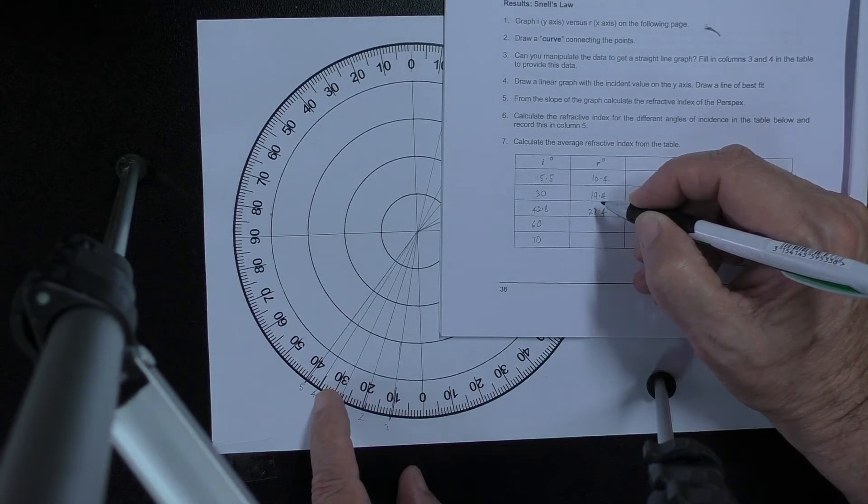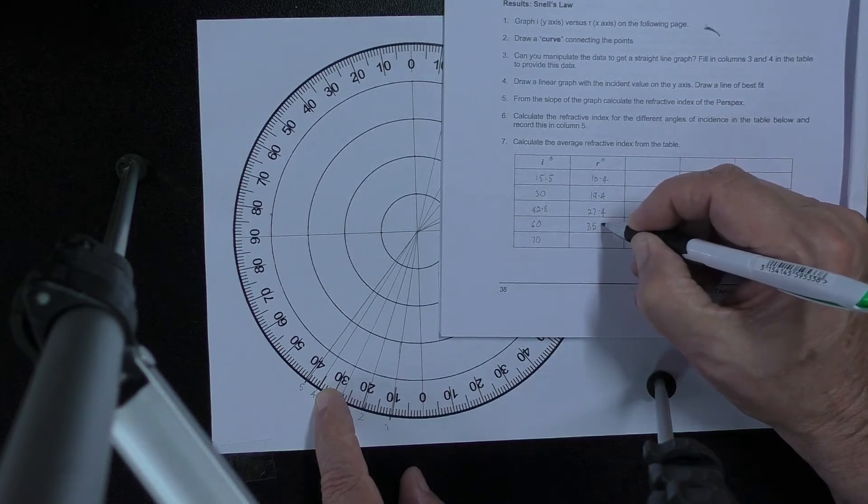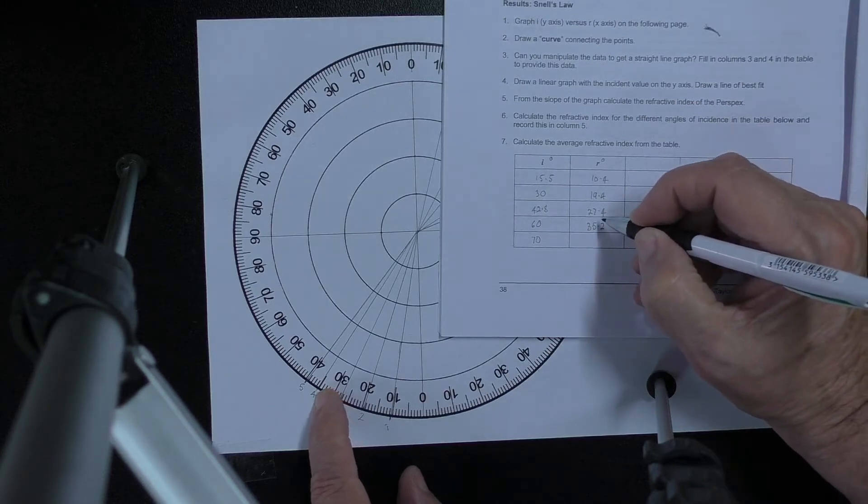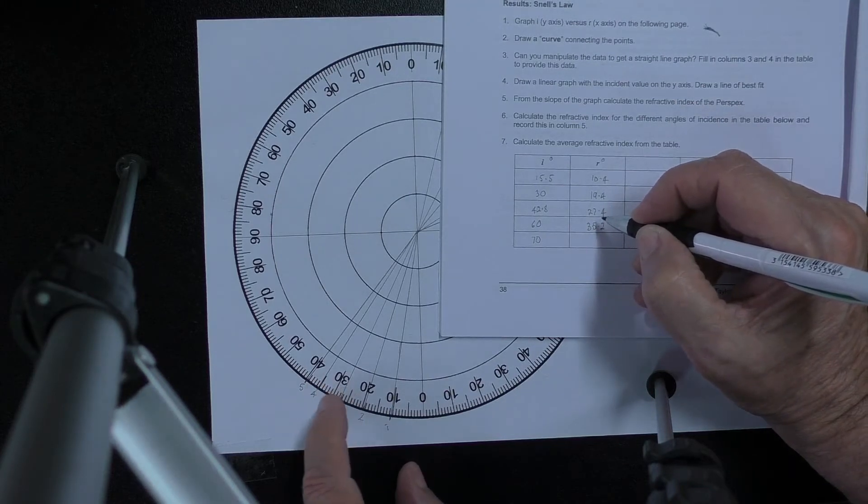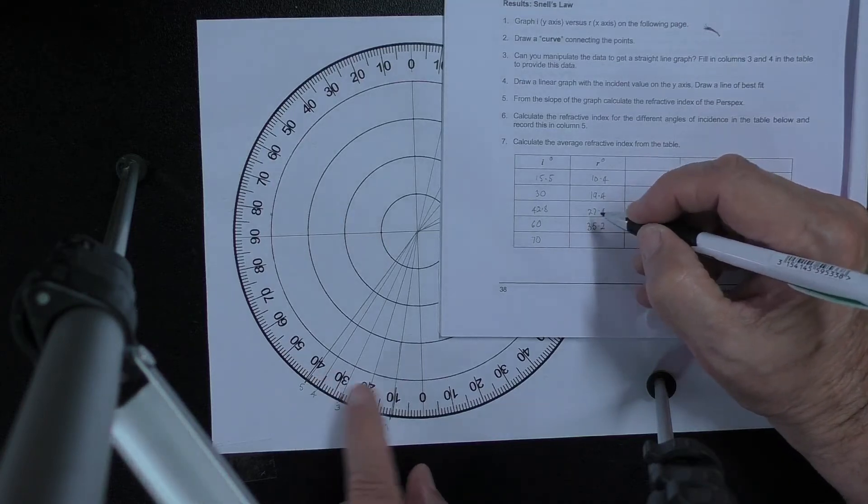Then the next one is 35, just a little bit more than 35. So 35.2 perhaps. And finally the last one there is 39 point something, maybe 39.5.